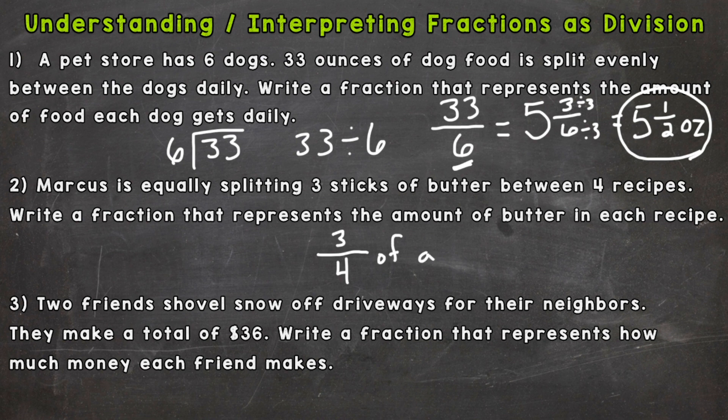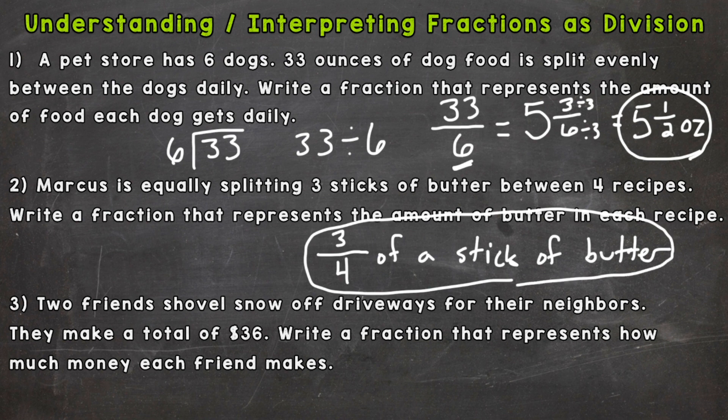We could circle our answer here. And again, the most important thing to take away from this video is whatever is being divided up, the number being divided up is your numerator or top number, and the number it is being divided by is your denominator, the bottom number.